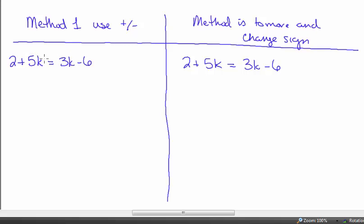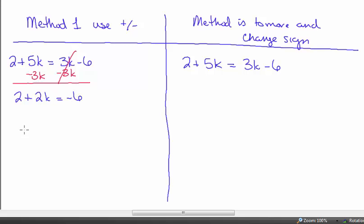Method one uses addition and subtraction. I want all my variables on the same side — I can move the k's to the right or left, it doesn't matter. I normally choose the one that gives me a positive number. In this case, subtracting 3k from both sides — because 5 minus 3 gives positive 2 — makes 3k go away, giving me 2 plus 2k equals negative 6.